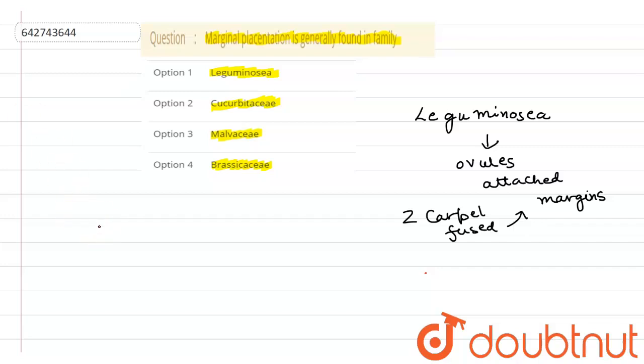And if we will see about the example of marginal placentation of family Leguminose, the example will be pea. Pea is the example of the family Leguminose.